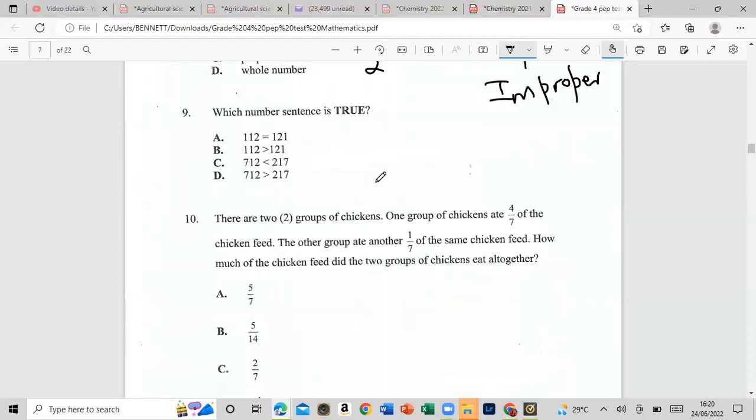Which number sentence is true? 112 is equal to 121? No, that is not true. 112 is less than 121, so that is not true. 112 is greater than 121? No, it's actually less. Let's look at this one now, 712 is less than 217? That is not correct, 712 is a larger number. This one now, 712 is greater than 217, and this would be correct. So our answer would be D.